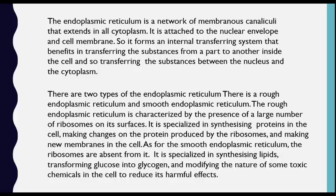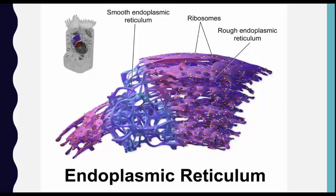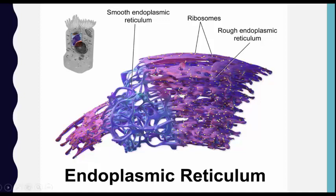As you can see here, this is the smooth endoplasmic reticulum. There is a big difference between the two forms — the rough endoplasmic reticulum has many ribosomes, seen here as tiny yellow points, and it is responsible for protein production and modification. The smooth endoplasmic reticulum does not contain any ribosomes and is responsible for lipid formation and so on.